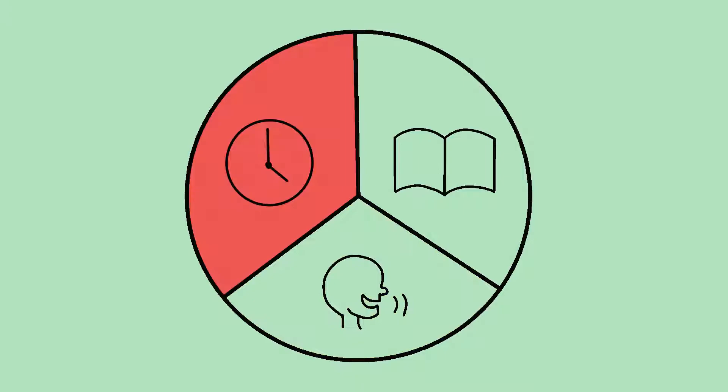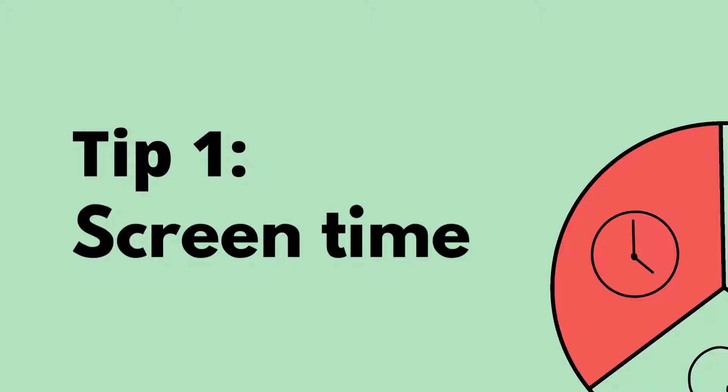Tip 1: Screen time. Manage the amount of time your child spends with digital tools. Children between 2 and 4 should have less than 1 hour of screen time per day.